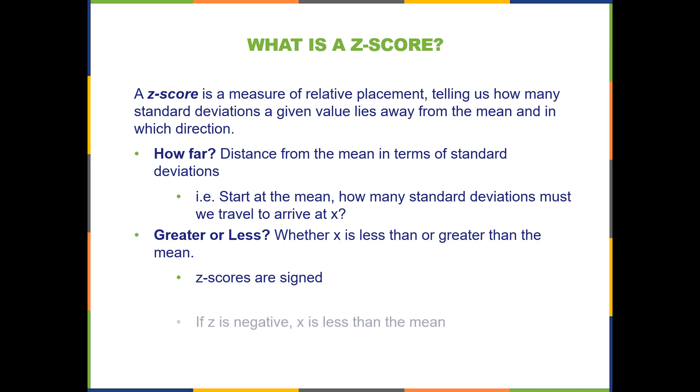Z-scores are signed. If z is negative, x is less than the mean. Vice versa, x being less than the mean means it will have a negative z-score.